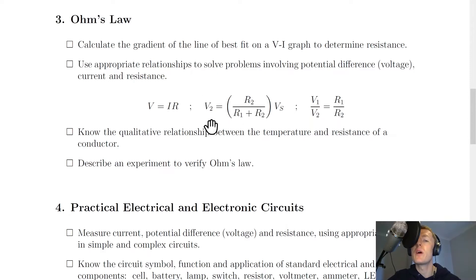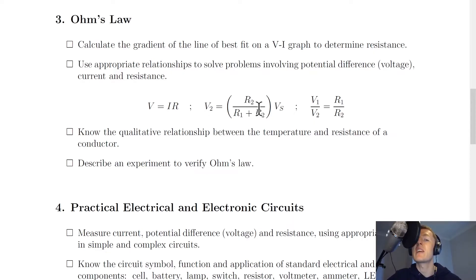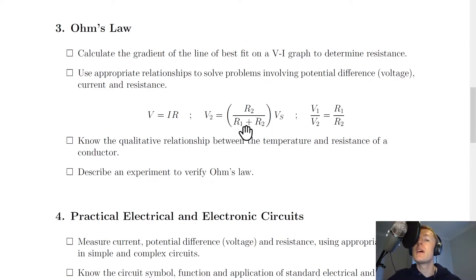Notice for the potential divider formula it starts with V2, but it depends on how you label your resistors. If you wanted to find V1, then R1 has to be the top resistor, so you could have V1 = (R1 / (R1 + R2)) × VS as well. Potential dividers are typically covered more in section four, practical electrical and electronic circuits, which we'll come to later.